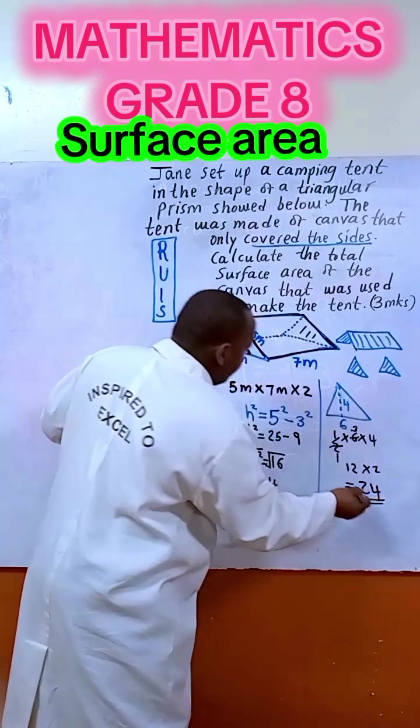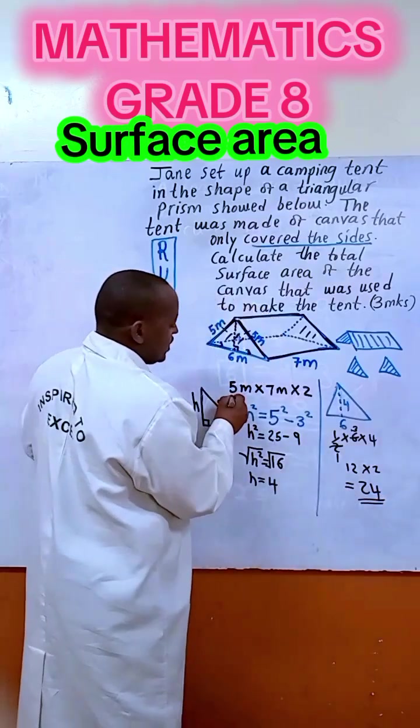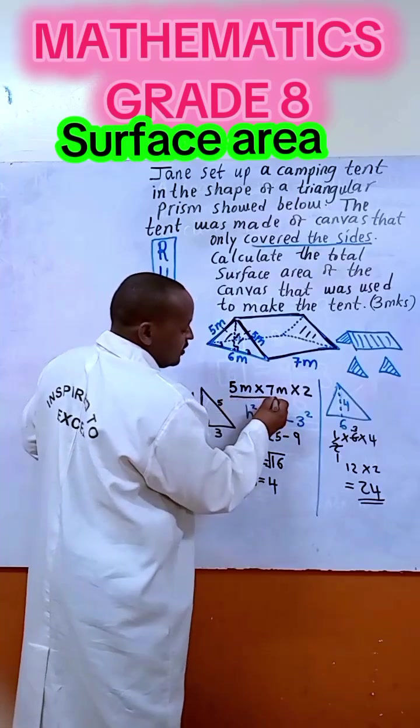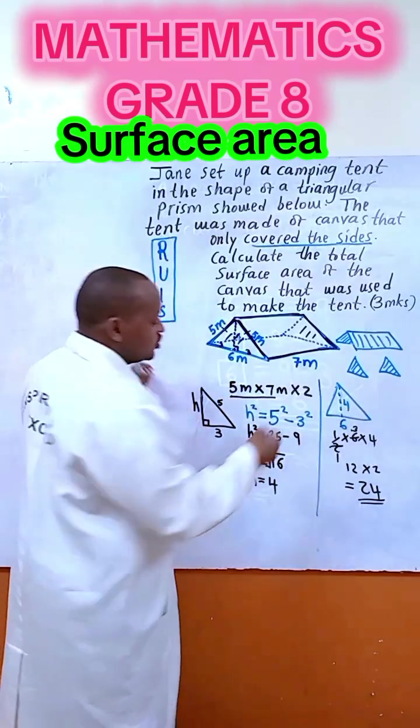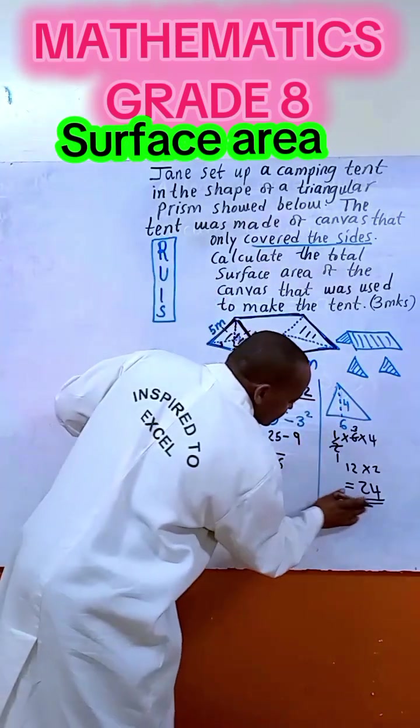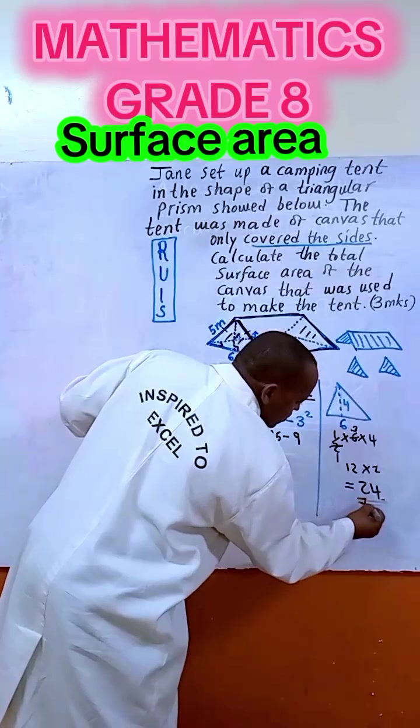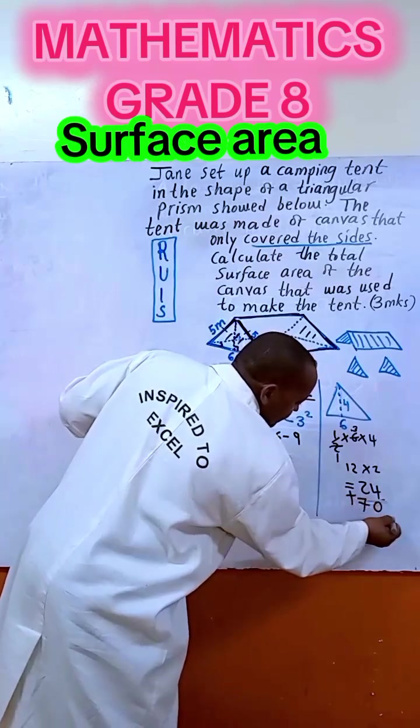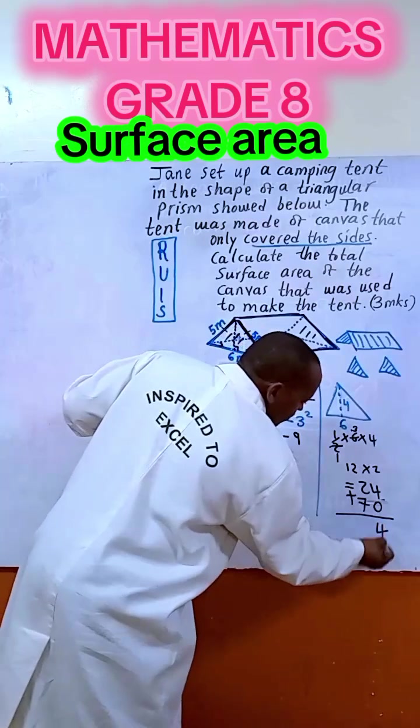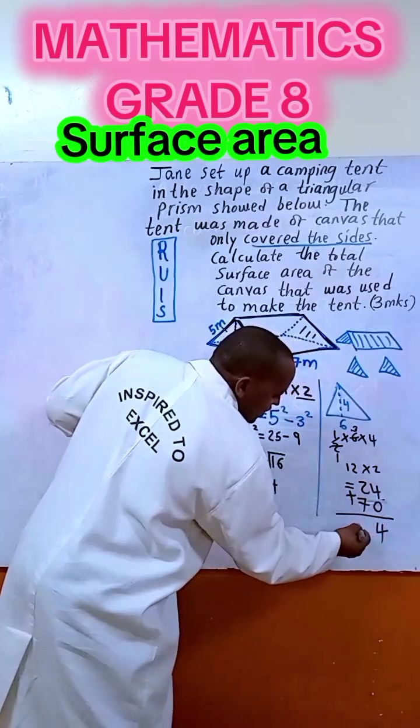So we have 24, and then we come back to the rectangles: 5 times 7 times 2 is 70. So you add 70 here, so just add, you get 94 meter squared.